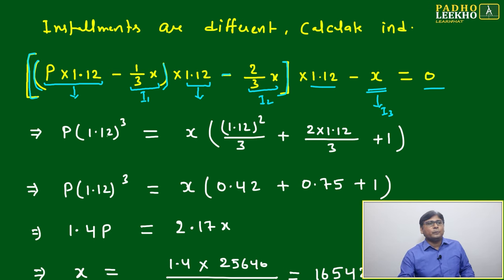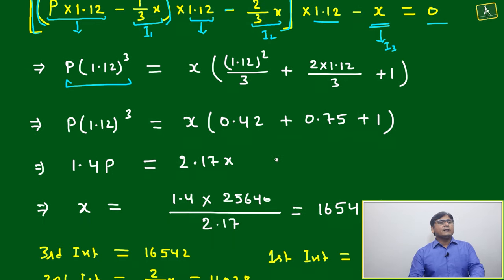Then we'll separate and do all X containing terms on the right side and P on the left side. Then it will come X times 1.12 squared plus 2/3 times this times this, then you will get finally 1.12 to the power 3. It will be equivalent to 1.4P, and this will come 2.17X.